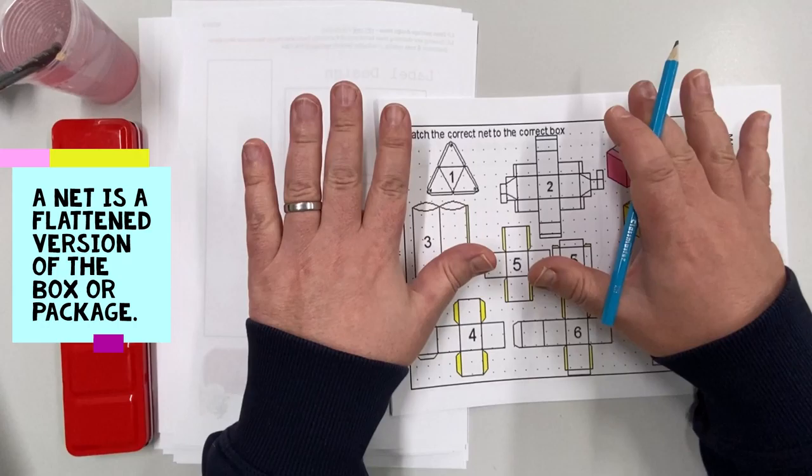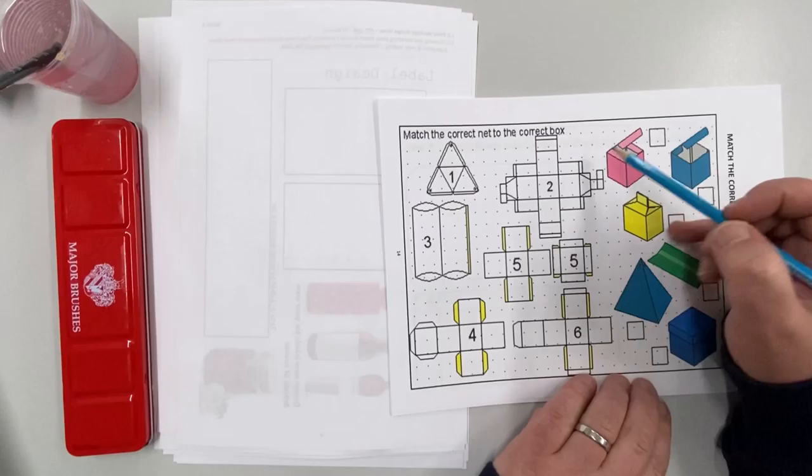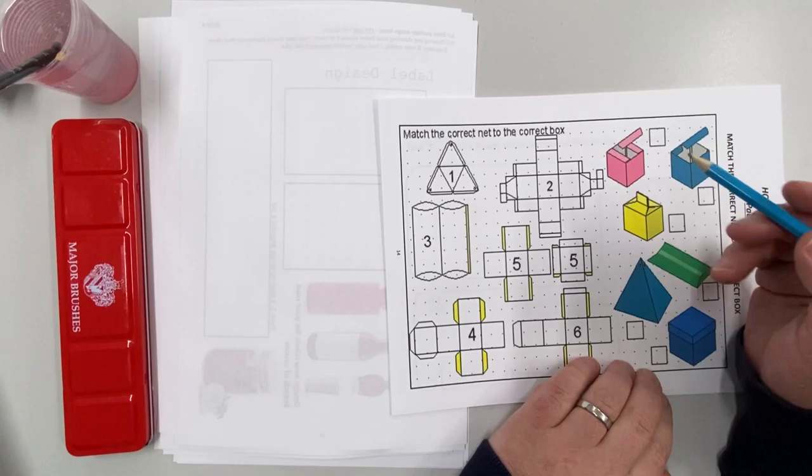And have been made flat on the table. And these are the boxes on the right hand side that have been constructed, built up. So if I was to lay this box flat, which of the nets would it resemble, which of the nets would it be? You might want to think about your dice or about a little simple box.